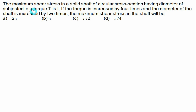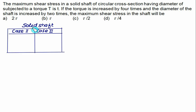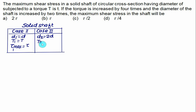A solid circular shaft of diameter d is subjected to torque T with maximum shear stress τ. The torque is increased four times and the diameter is doubled. We need to find the new maximum shear stress. Initial case: d1 = d, T1 = T, τ_max1 = τ. Final case: d2 = 2d, T2 = 4T, find τ_max2.